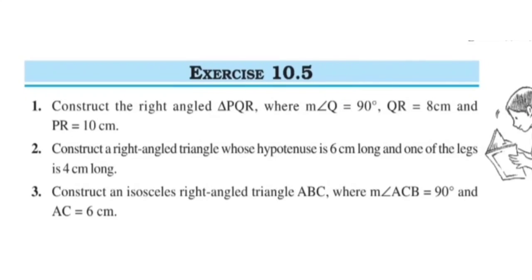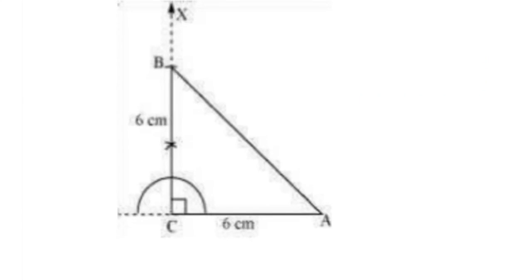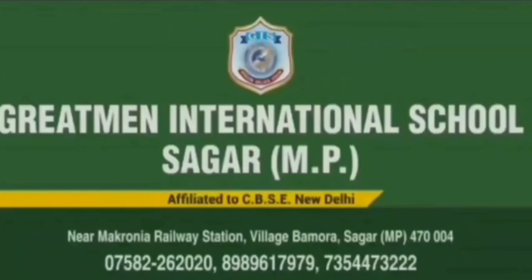Now see Question 3: Construct an isosceles right-angled triangle ABC where angle ACB equals 90 degrees and AC equals 6 centimeters. See the steps: first draw a line segment AC of length 6 centimeters. At point C, draw a ray CX making an angle of 90 degrees with AC. Taking C as center, draw an arc of 6 centimeter radius to intersect CX at point B. Join A to B to obtain the required triangle ABC. So ABC is the required triangle. Scholars, Chapter 10 is now completed. For the worksheet, see the link given in the description box. Thank you everyone.